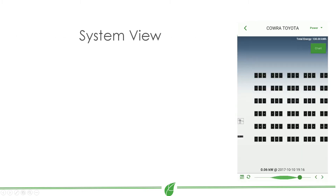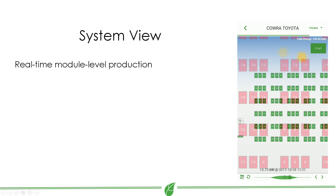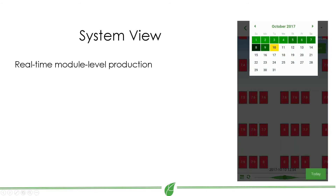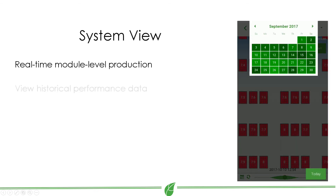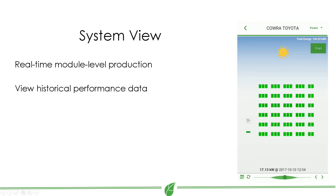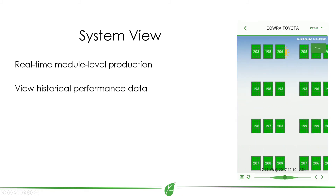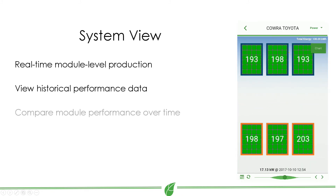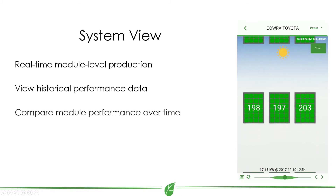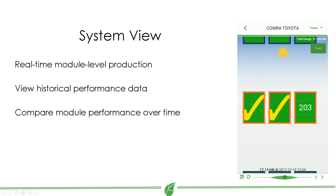You can view your system's production and access historical production data via the calendar. You can even compare the performance of modules in your system over time by tapping a module and tapping Add to Chart.